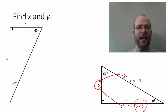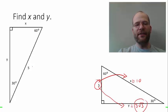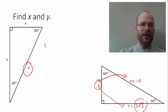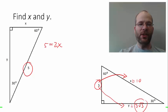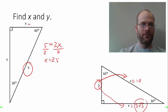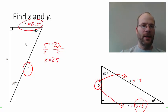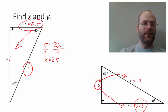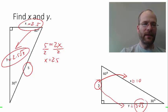Here's another example — find x and y. This time we know the hypotenuse and need to reason backwards. The hypotenuse equals twice the short leg, so we divide by 2: x equals 2.5. Now that we've found the short leg, the long leg is easy: y equals 2.5 times the square root of 3.